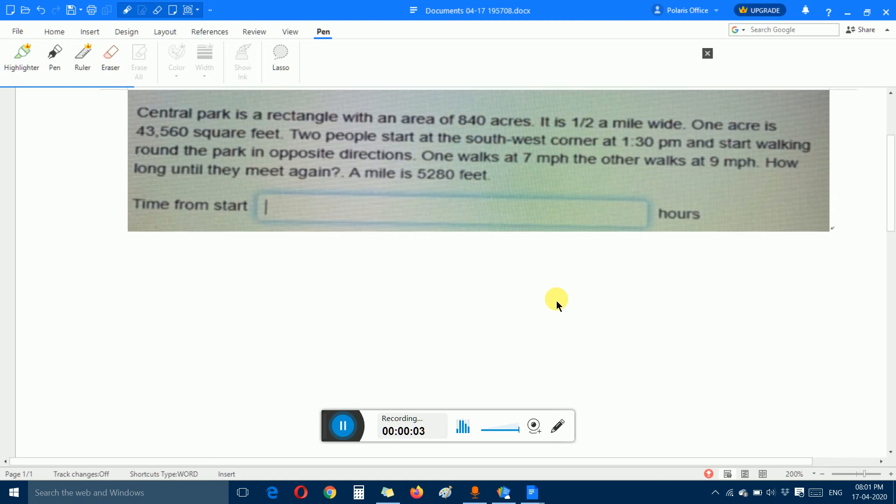Suppose we want to solve a question. Central Park is a rectangle with an area of 840 acres. It is 1/2 a mile wide, and one acre is 43,560 square feet. Two people start at the southwest corner at 1:30 PM and start walking around the park in opposite directions. One walks at 7 miles per hour, the other walks at 9 miles per hour. How long until they meet again?